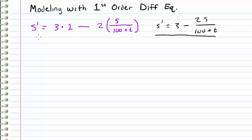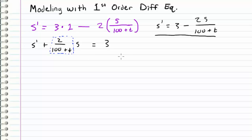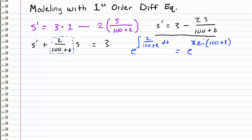Now let's solve this equation. Putting it in standard form: s prime plus 2/(100 + t) times s equals 3. Since this is a non-separable differential equation, we find an integrating factor mu by taking e to the integral of 2/(100 + t) dt, which gives e to the 2 times the natural log of (100 + t). Moving the 2 to the exponent and canceling e to the natural log, we get mu equals (100 + t) squared.